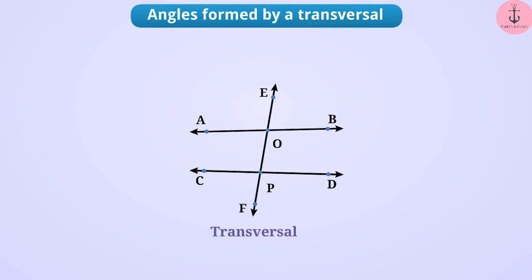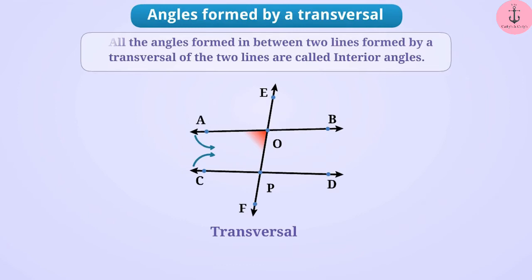Let us revise all angles formed by a transversal. When we draw two lines AB and CD and a transversal EF that intersects AB at O and CD at P, we obtain eight angles: angle AOE, angle EOB, angle AOF, angle BOF, angle CPE, angle DPE, angle CPF, and angle DPF. Angle AOF is situated between lines AB and CD, so it is an interior angle. Similarly, angle BOF, angle CPE, and angle DPE are also interior angles.